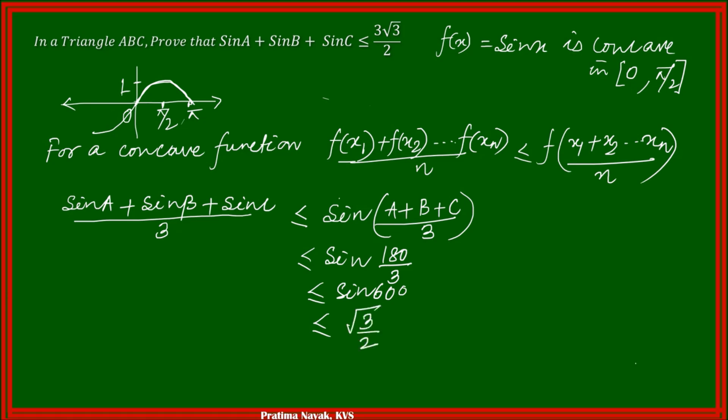So we are getting sin A plus sin B plus sin C divided by 3 is less than or equal to root 3 by 2. Multiplying 3 to the right side, sin of A plus sin of B plus sin of C is less than or equal to 3 root 3 over 2. So we proved. This is very simple.